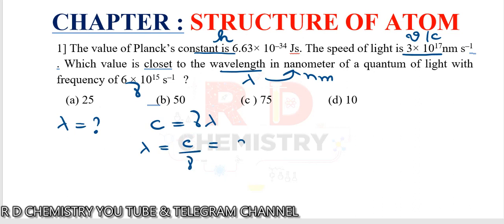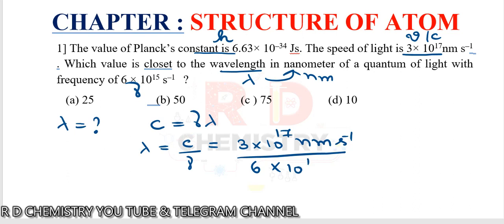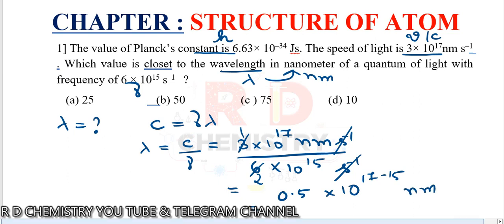c is given as 3 × 10^17 nm·s⁻¹ and frequency ν is 6 × 10^15 s⁻¹. The seconds cancel. So 3/6 = 0.5, and 10^(17−15) = 10^2, giving 0.5 × 10^2 = 50 nanometers. So the answer is option number B.